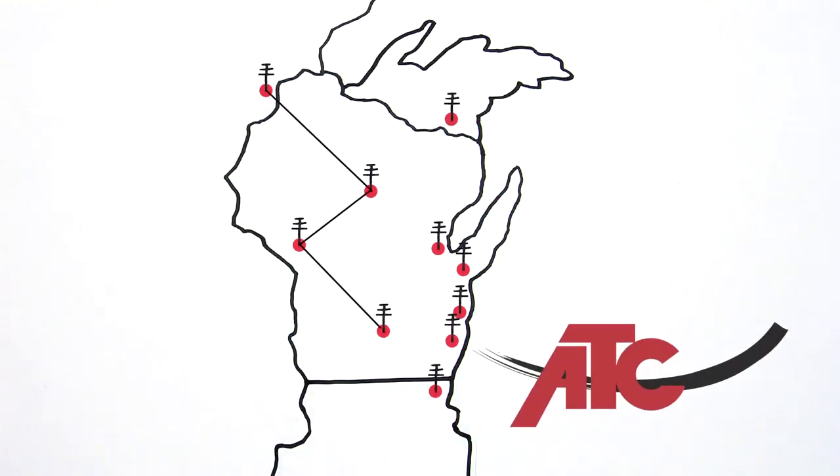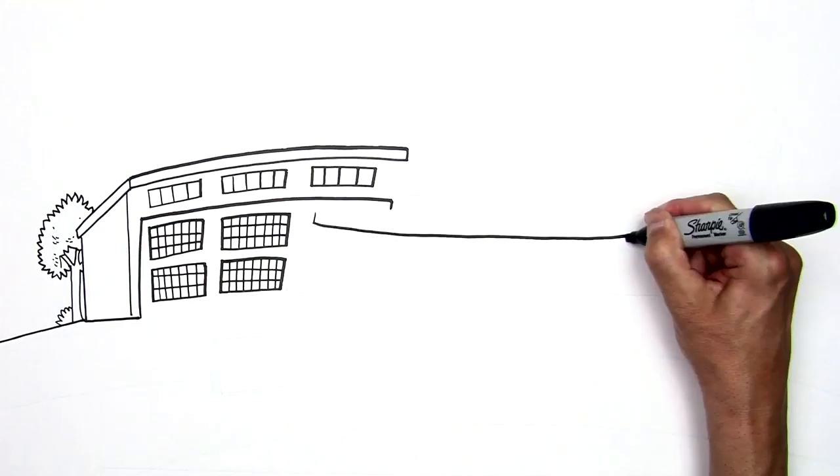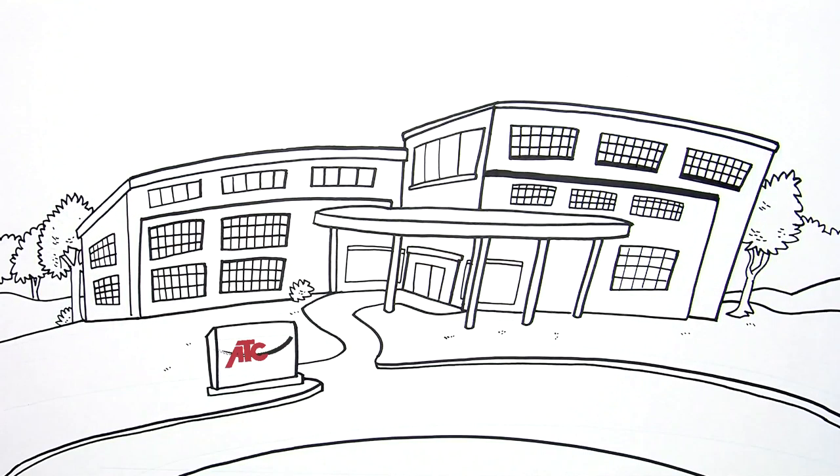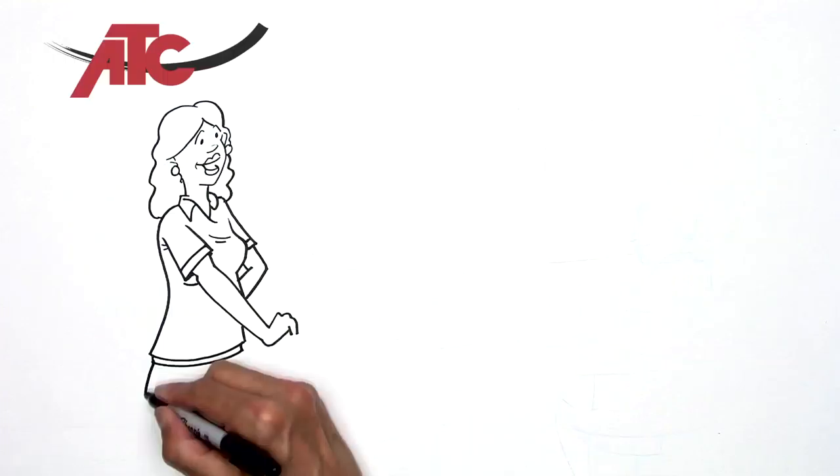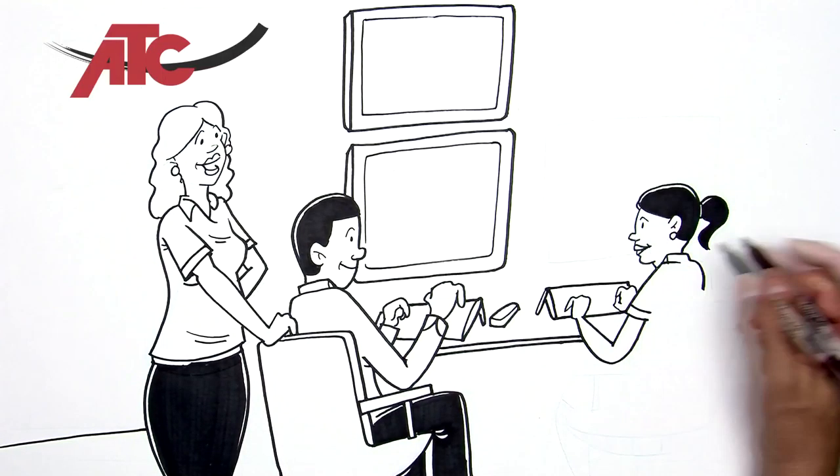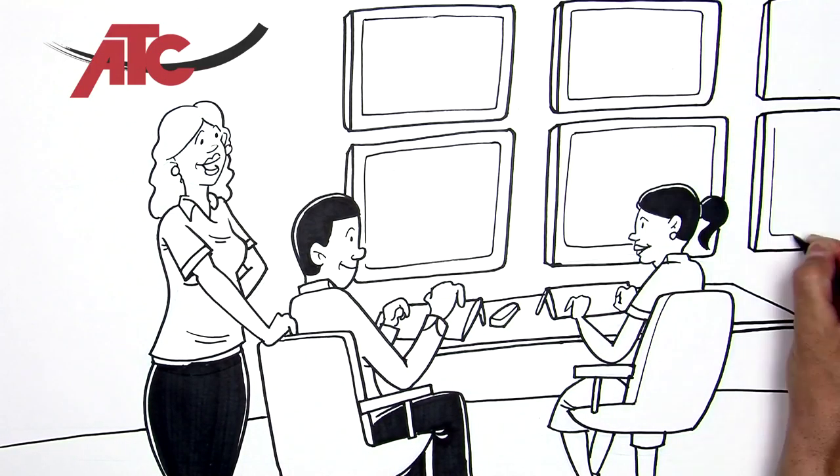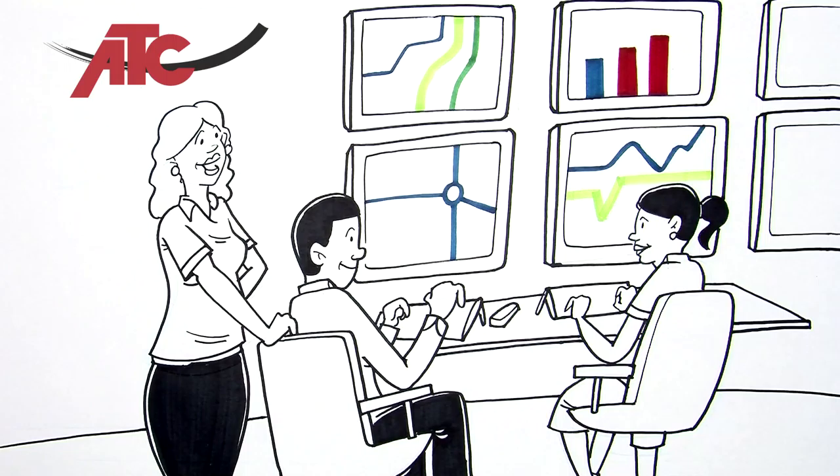American Transmission Company owns, operates, and maintains the grid. Why is there a company devoted to just the transmission system? Because it allows us a single focus: operational excellence in the dependable and efficient delivery of electric power 24-7.